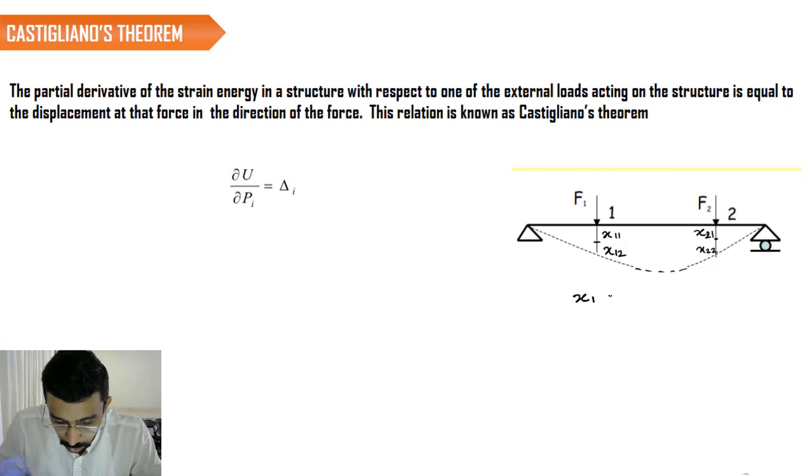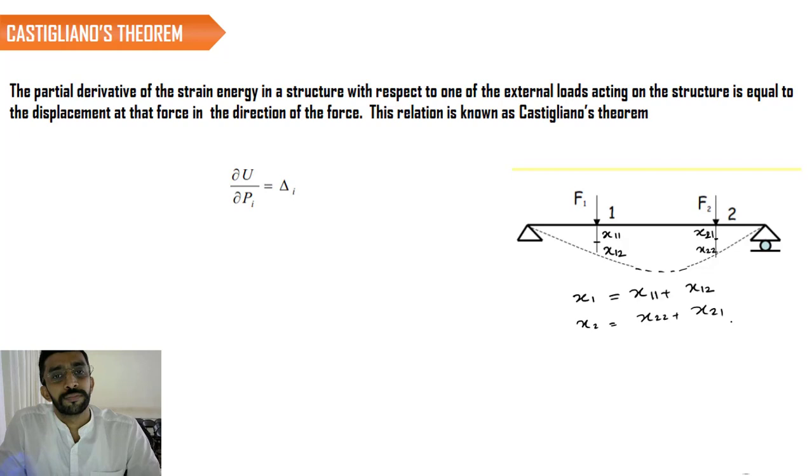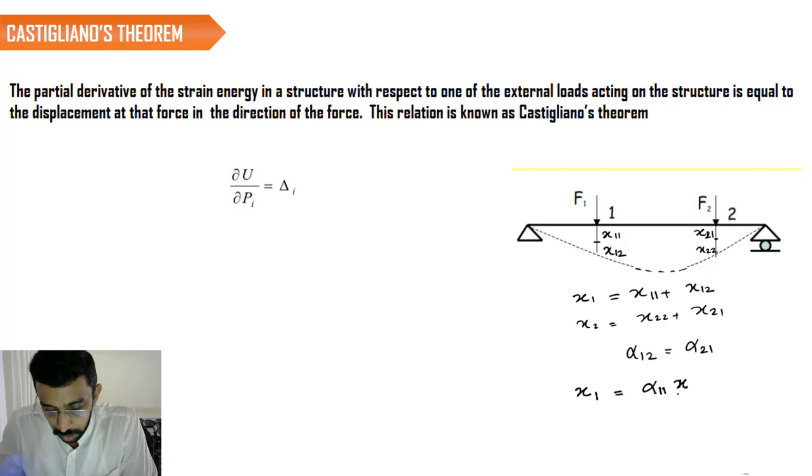Altogether I can write that X1 is equal to X11 plus X12 and X2 is equal to X22 plus X21. And in Maxwell's relation, we learned that alpha 12 is equal to X21. And if we introduce alpha 11, alpha 21, and alpha 12 in this equation, I can rewrite the equation as X1 is equal to alpha 11 F1 plus alpha 12 F2.